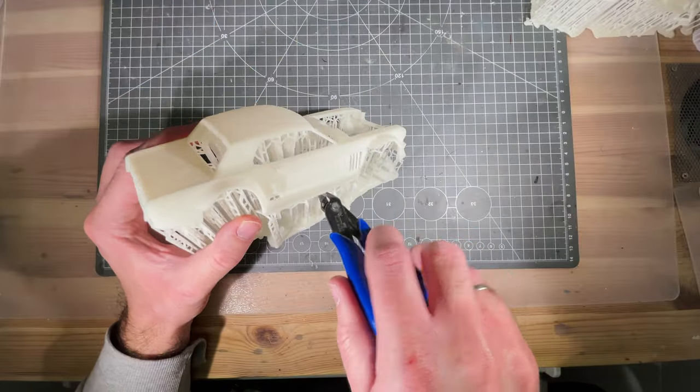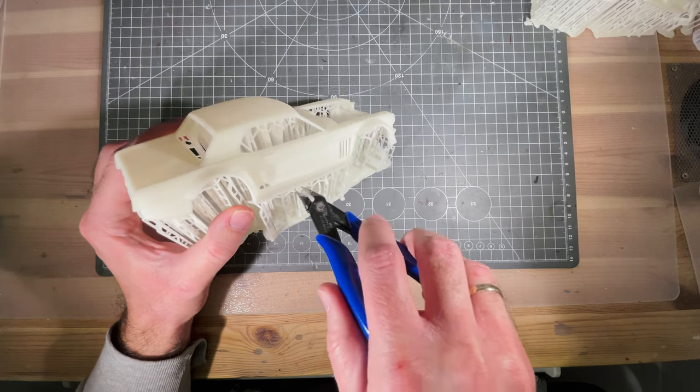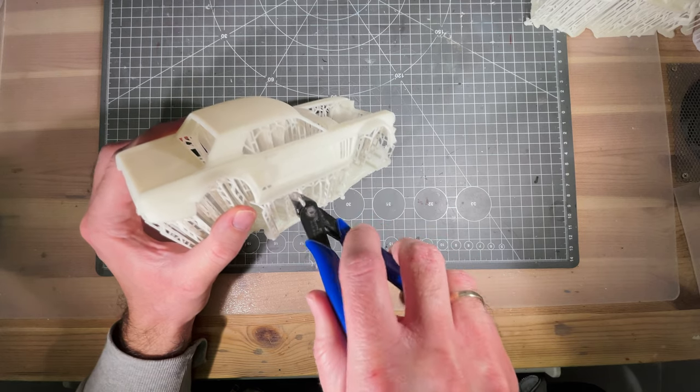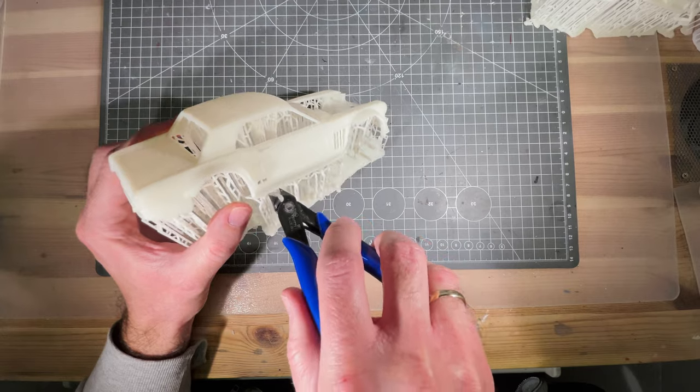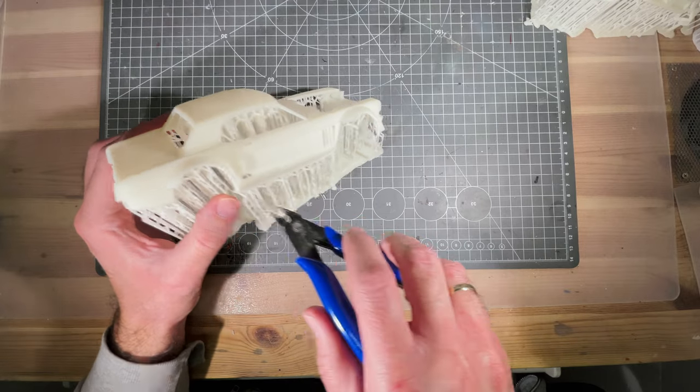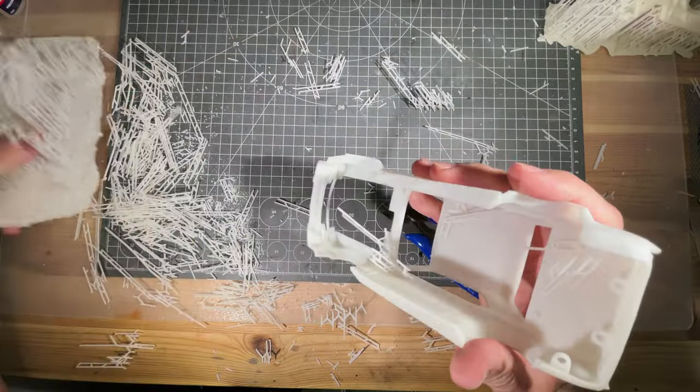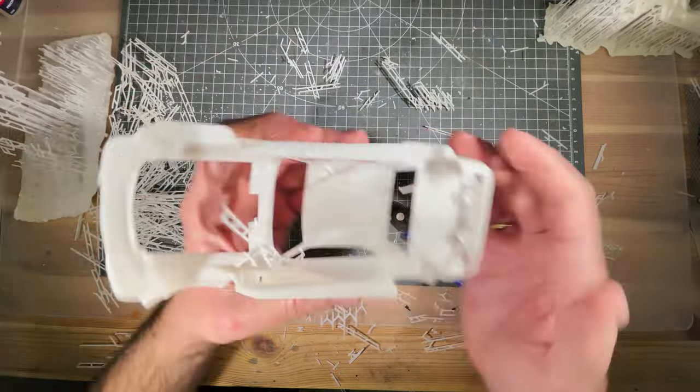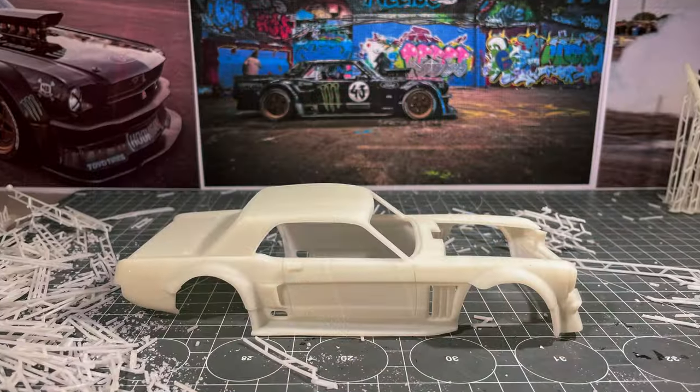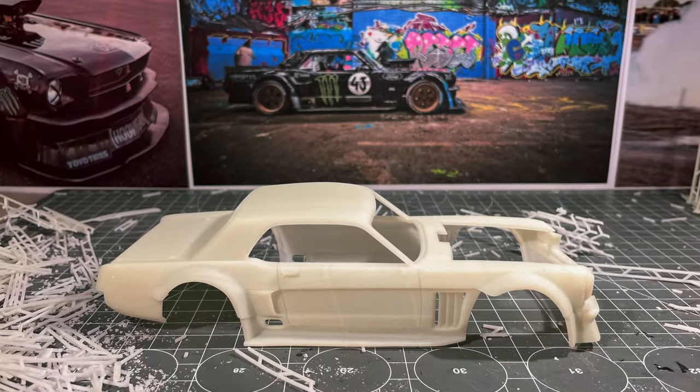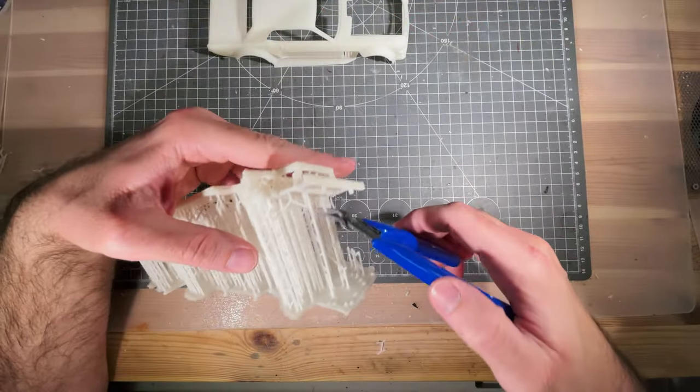After printing you need to remove the supports. It's your choice after curing or before curing. I left cure with the supports to prevent any deformation of the model. Almost what we planned. The frame chassis came out well.